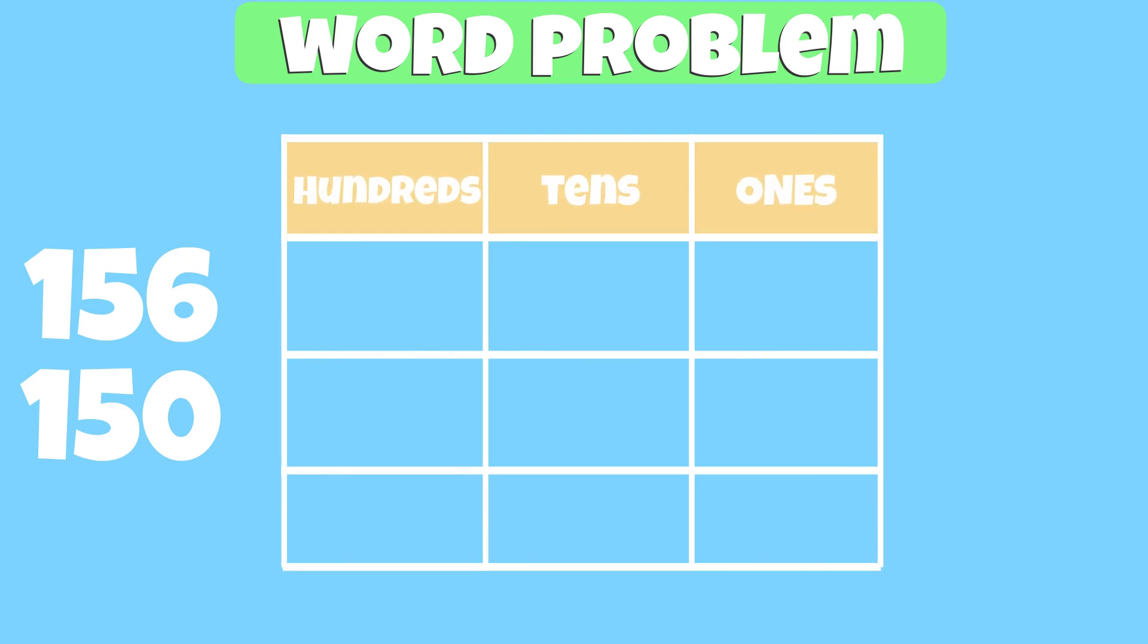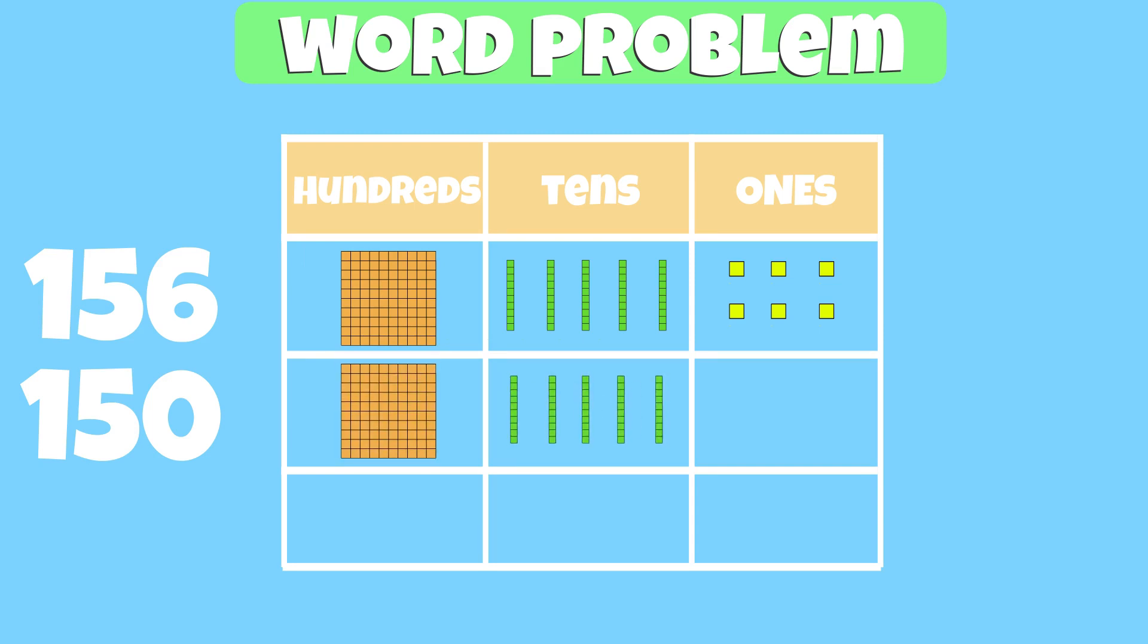We can represent both numbers using our understanding of place value. In the number 156, we have 6 groups of 1, 5 groups of 10, and 1 group of 100. In the number 150, we have 5 groups of 10, and 1 hundred.